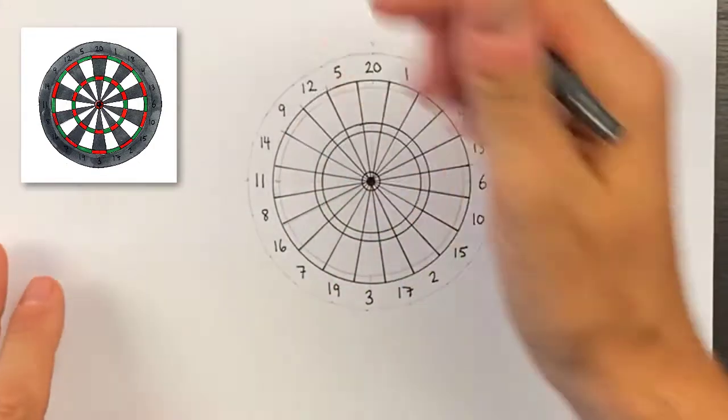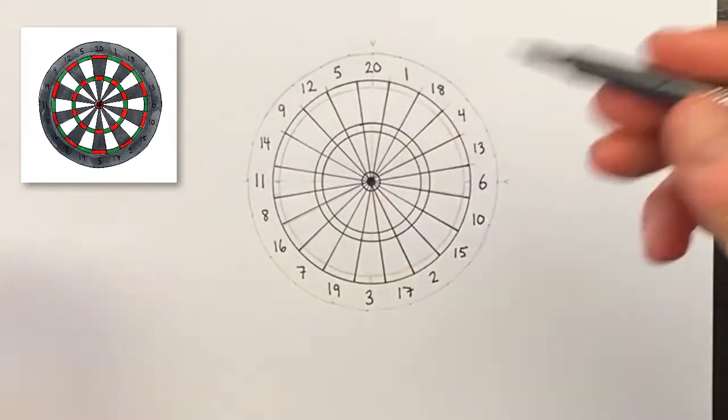Now we have all of our numbers correctly positioned. I'm going to ink the rest of this and we'll go and color it in.